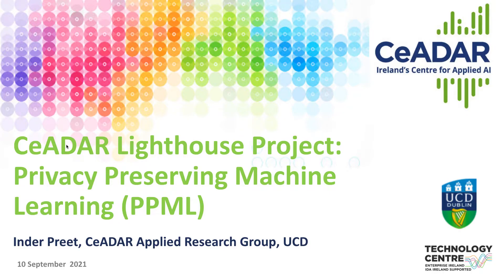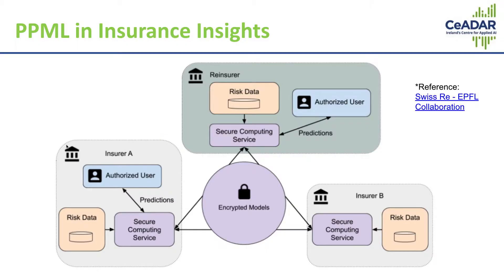The first use case comes from the insurance industry. In the insurance industry there is a primary insurer which has all the risk data about its customers, and there are several such insurers. But there are also reinsurers which insure these insurers. The problem here is that a lot of data that insurers have cannot be shared with other insurers or even the reinsurer.